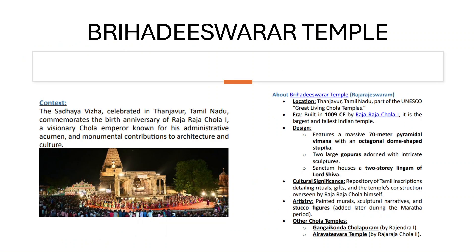Tamil Nadu recently commemorated the birth anniversary of Raja Raja Chola I, a visionary Chola emperor known for his administrative acumen and monumental contributions to the architecture and culture of the Thanjavur region. The Brihadeeswara Temple is located within the Great Living Chola Temples recognized by UNESCO and was built around 1009 CE by Raja Raja Chola I. Its design features a massive 70-meter pyramidal vimana, an octagonal dome-shaped stupika, two large gopuras, and a two-story Shiva lingam.